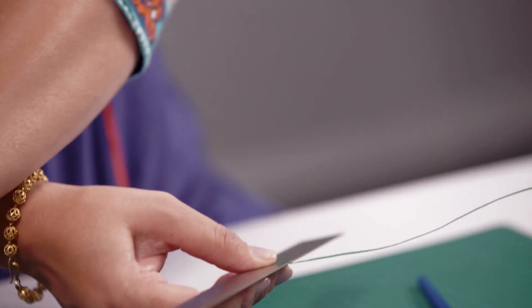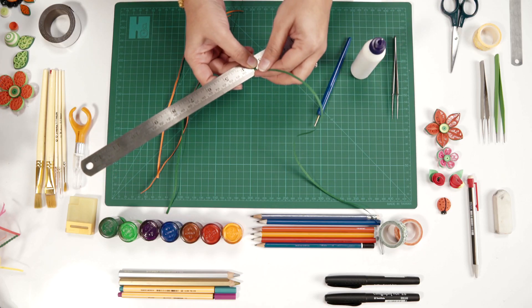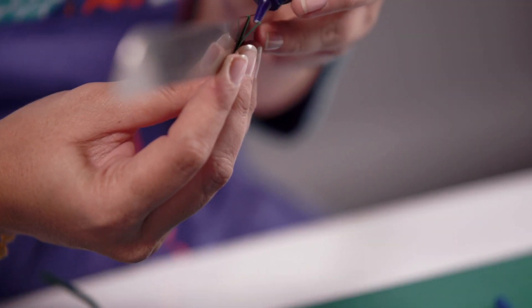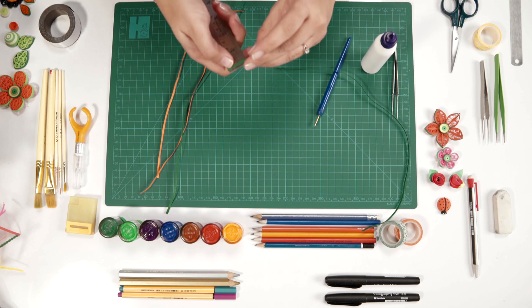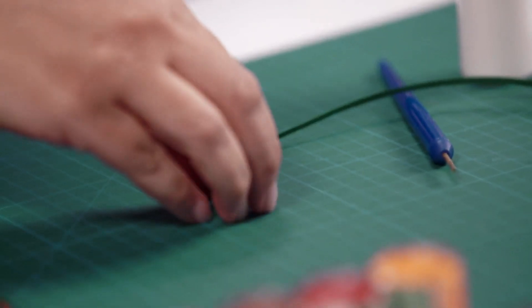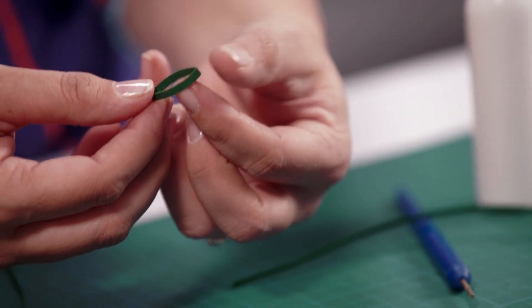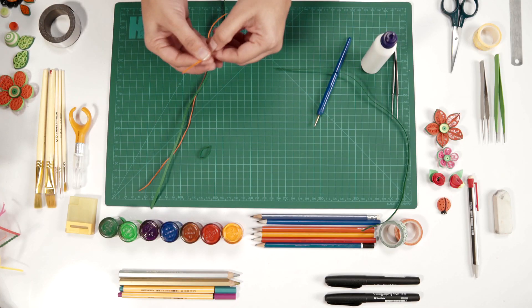Apply some glue. Apply a little bit of glue, pull it out and that's going to be our mold for the petals. Keep that aside and we will start filling the petal up.